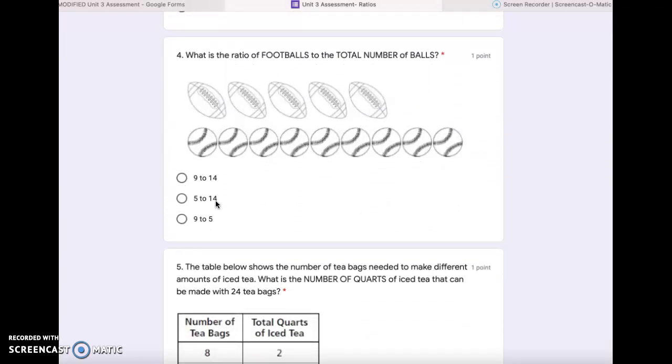Number 4. What is the ratio of footballs to the total number of all of the balls? So you're counting the footballs and then counting the total number of both footballs and baseballs. Your choices are 9 to 14, 5 to 14, or 9 to 5.